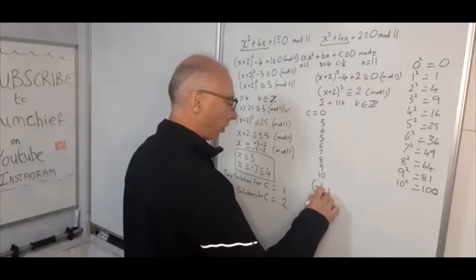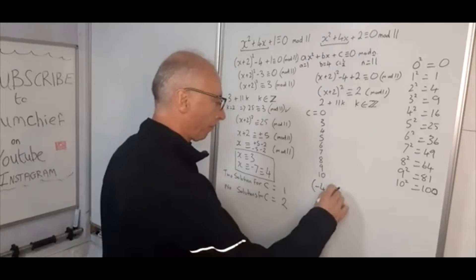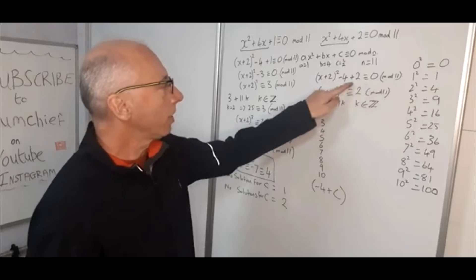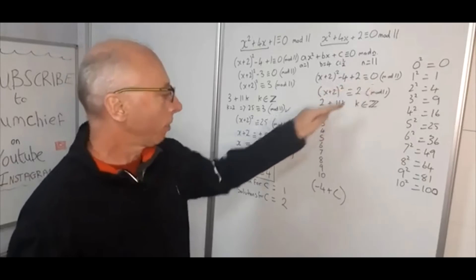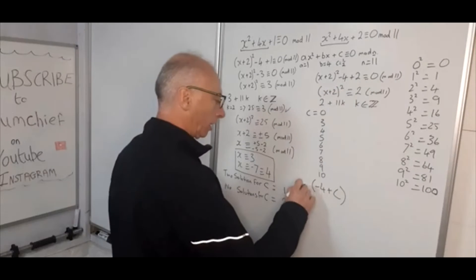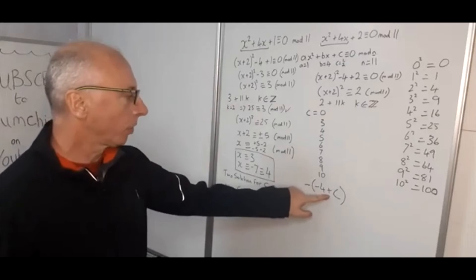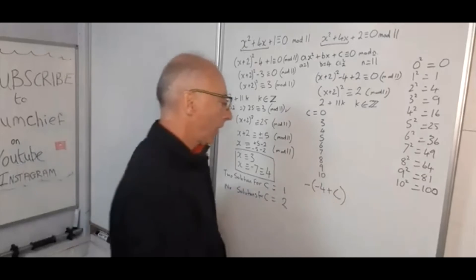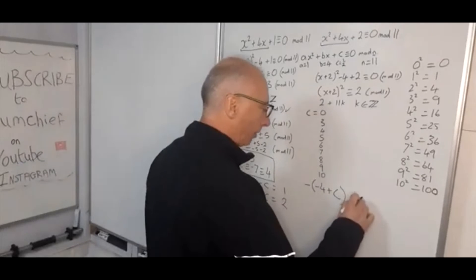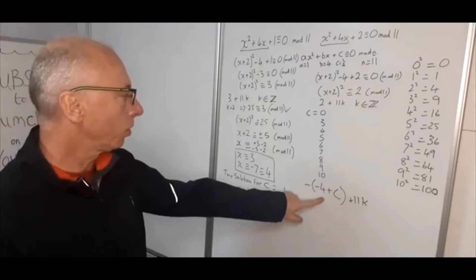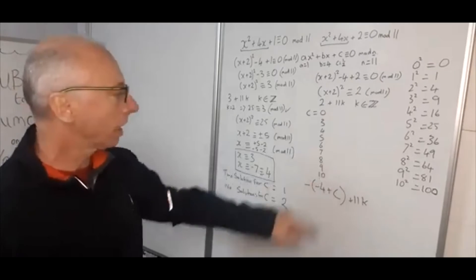So we've got minus 4 plus c, and then what happens is we flip it to the other side, so therefore then that becomes minus of whatever we've got in here. So our formula here what we need is minus of minus 4 plus c, and then add 11k, obviously k we know is an integer. So this is our formula which we're going to use when using this table here.